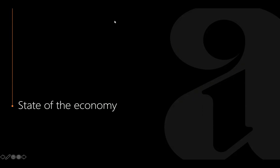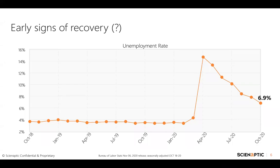Let's jump into the first section of our presentation: the state of the economy. This is an interesting chart on the unemployment rate starting October 2018, spanning across two years. If unemployment is any pulse check on the health of the economy, one would look at this chart and feel quite optimistic. As of the latest figures released by the Bureau of Labor Statistics on November 6th, the unemployment rate stands at about 6.9% — a significant drop from the peaks of circa 15% we had seen in the March-April timeframe.